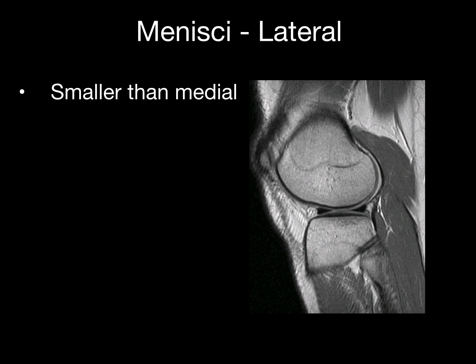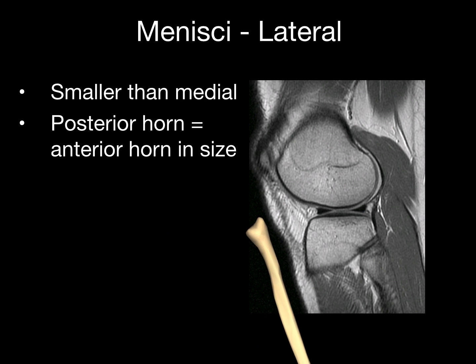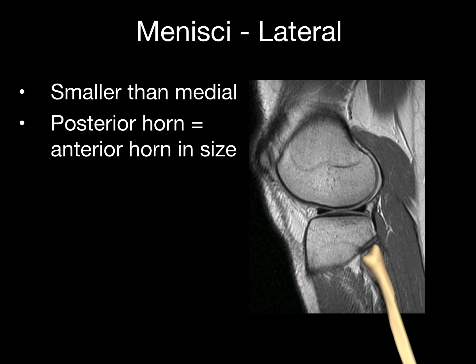The lateral meniscus is smaller than the medial, and the posterior horn and anterior horn are equal in size. One way to determine whether you're on the lateral side is the asymmetry of the tibia. Another way is the presence of the fibula.